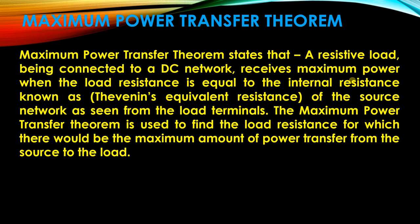First of all, we will discuss the statement of the Maximum Power Transfer Theorem. It states that a resistive load connected to a DC network receives maximum power when the load resistance equals the internal resistance — known as Thevenin's equivalent resistance of the source network — as seen from the load terminals. The theorem is used to find the load resistance for which the maximum amount of power is transferred from the source to the load.